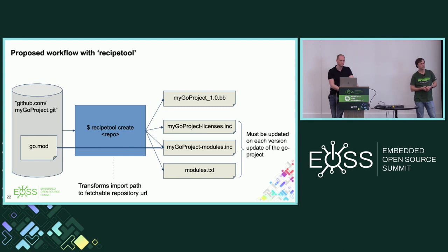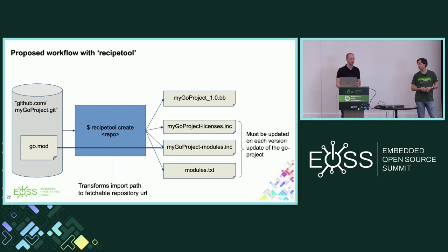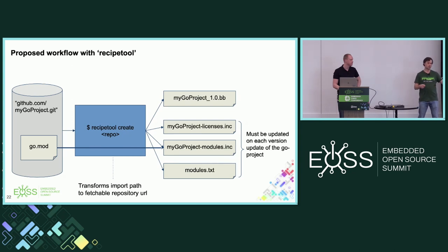Question: If you are putting in a recipe for a Go project which already does vendoring, have you had any thoughts about how to get license handling, CVE handling, and all of that? If you run RecipeTool on a project which already has a vendor folder, we are currently more or less ignoring it — it will fail. You have to remove the vendoring first, and then RecipeTool can handle it by regenerating everything properly.